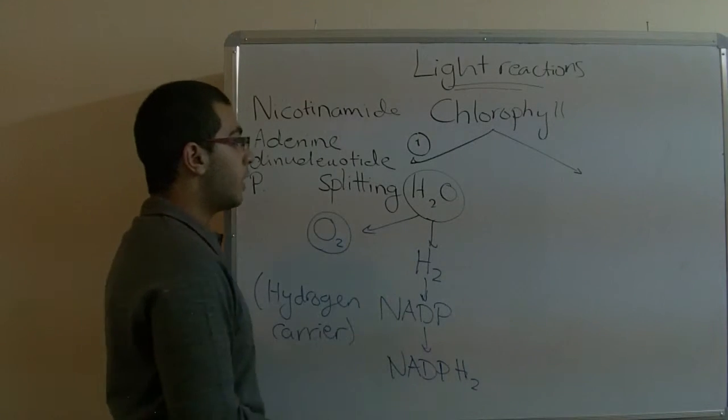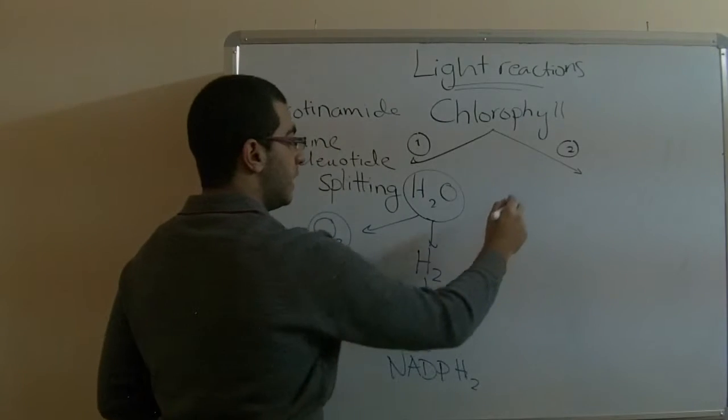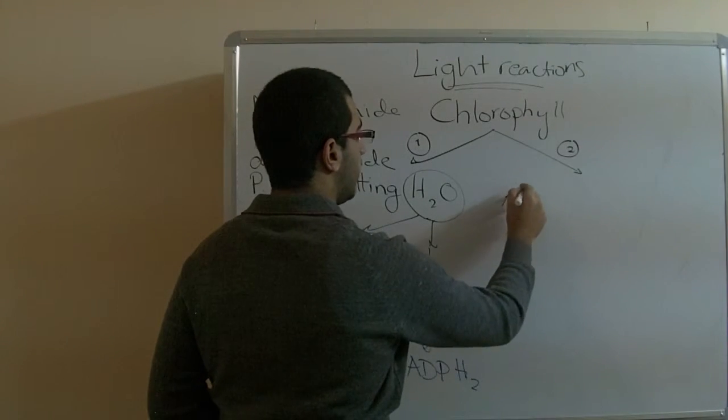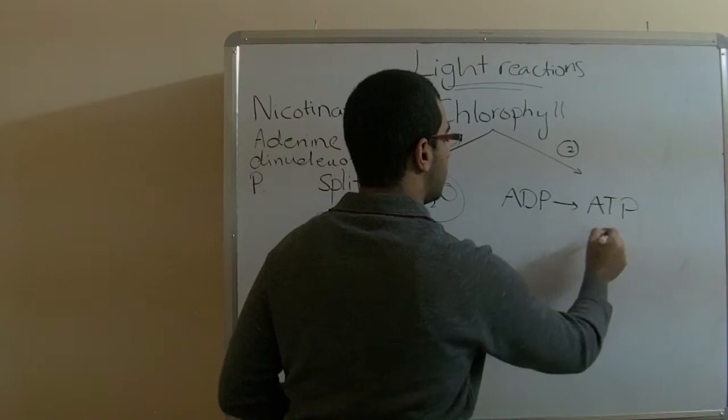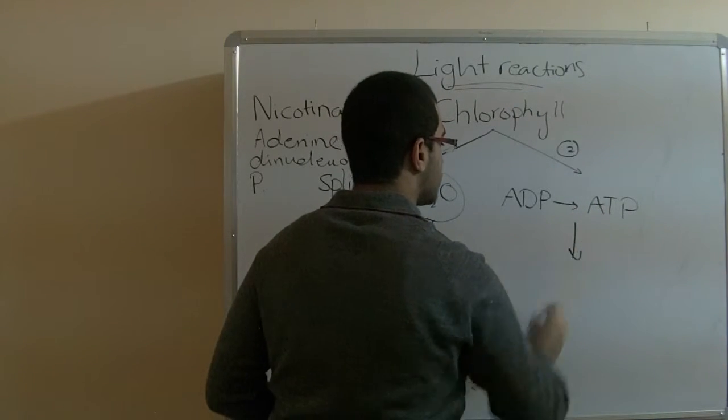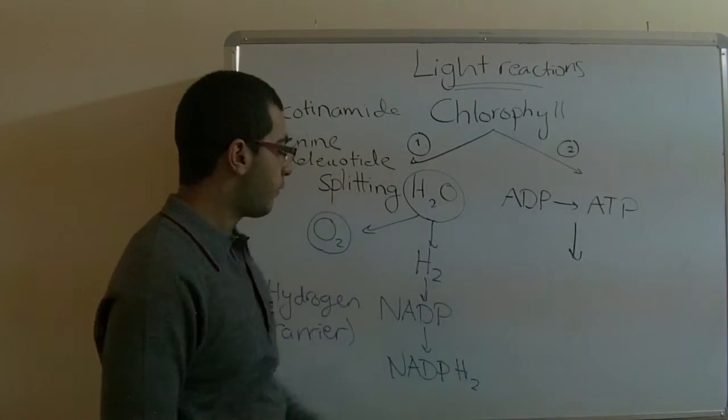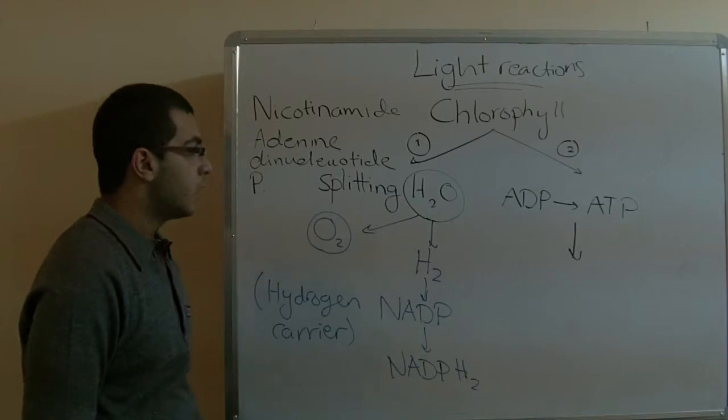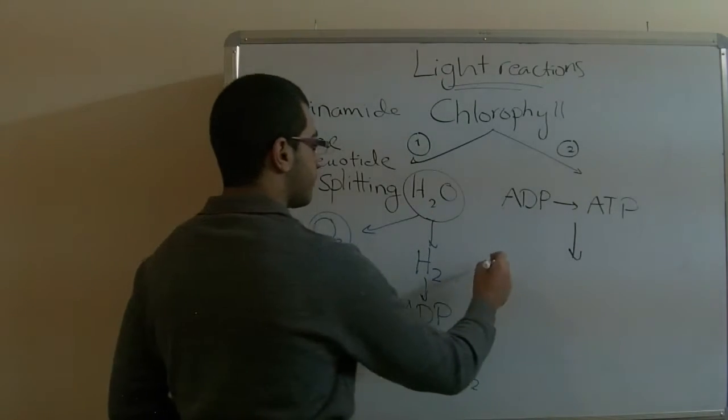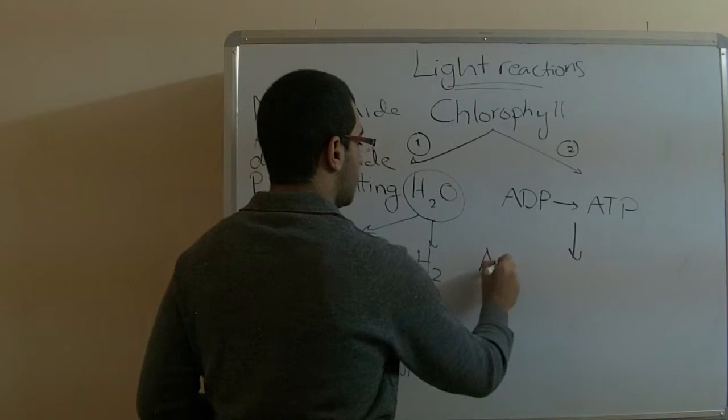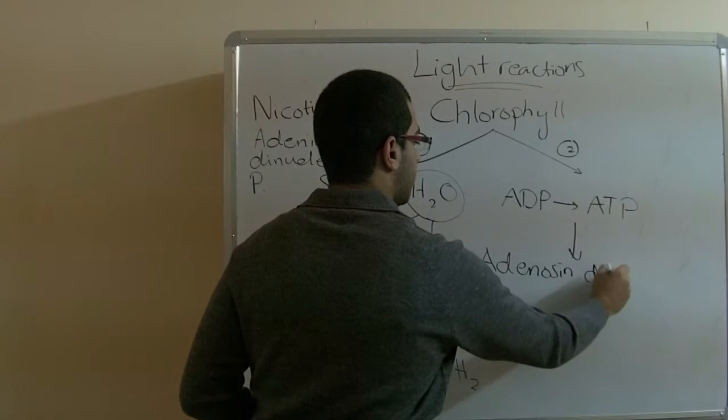The second part is used in the conversion of ADP into ATP to also perform its place in the dark reactions. The ADP is called adenosine diphosphate.